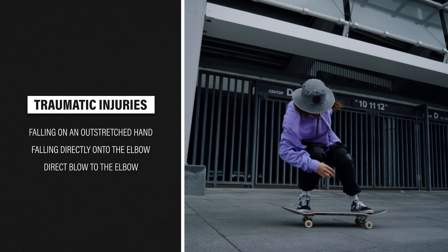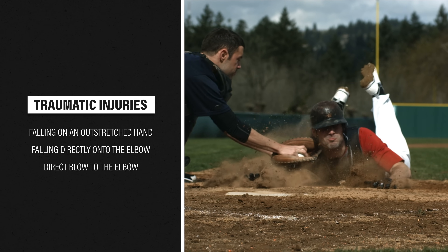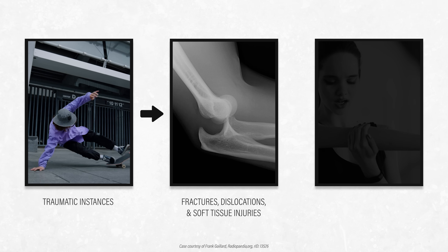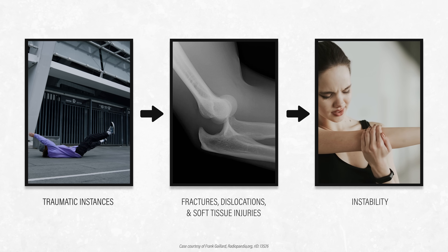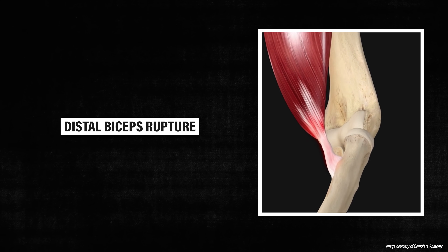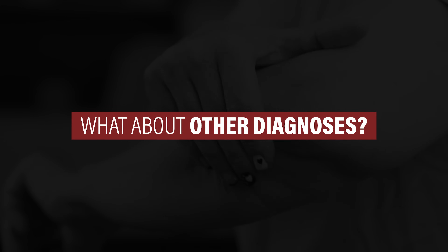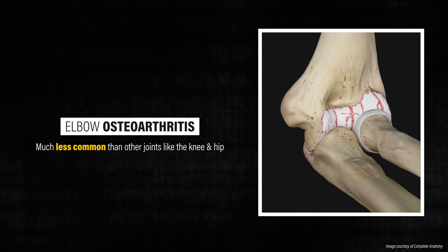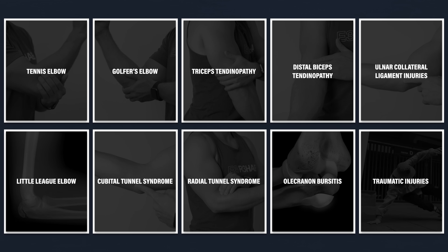A common cause of elbow injuries is trauma, such as falling on an outstretched hand, falling directly onto the elbow, or from a direct blow to the elbow. These traumatic instances can result in fractures, dislocations, and soft tissue injuries, and can lead to instability of the elbow joint. A distal biceps rupture also falls into this category. While I can't cover every possible diagnosis — for example, osteoarthritis of the elbow is much less common than in the knee and hip — I tried to review the diagnoses most often asked about. This information should not serve as a substitution for a consultation with a medical doctor or physical therapist.